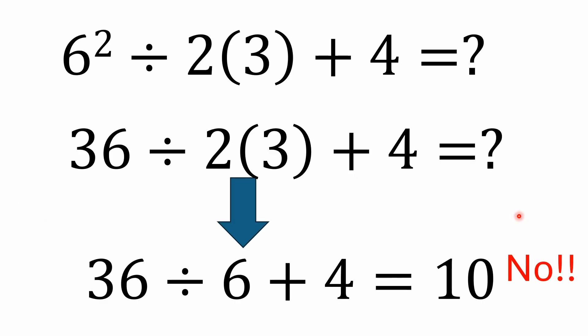What they're doing is they're doing the exponents fine. They're doing the 36. But then they're moving over here and multiplying 2 times 3 and getting 6. And then they're saying 36 divided by 6 is 6. 6 plus 4 is 10. And that's not true, according to PEMDAS.